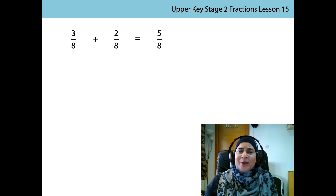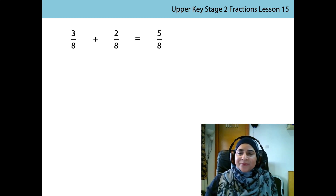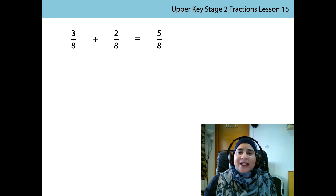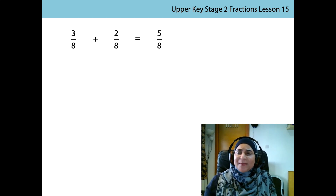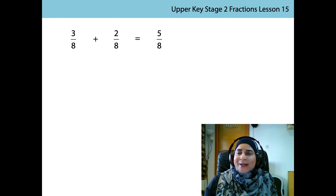What do you notice about the numbers in my equation? What stays the same? What changes? The denominator stays the same - it is always eight. But the numerator is different for each of the fractions. The denominator is the number of equal parts in a whole. Here the denominator is always eight because I divided the apple into eight equal parts - that doesn't change.